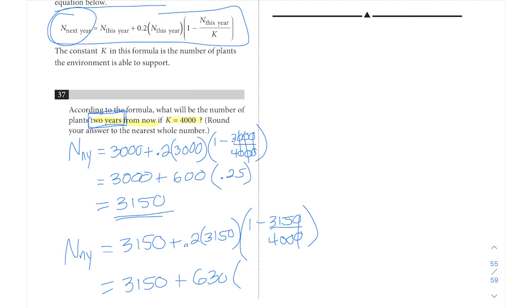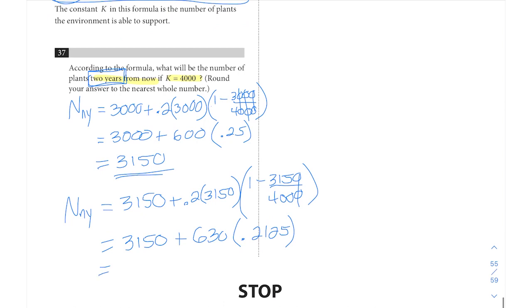0.2 times 3,150 would be 630, times 1 minus 3,150 over 4,000. If you cancel out your zeros here, you get 3.15 over 4, which would be 0.7875. And 1 minus that gives us 0.2125. When we do the math on it, 630 times 0.2125 plus 3,150, we're going to get a total of 3,283.875.